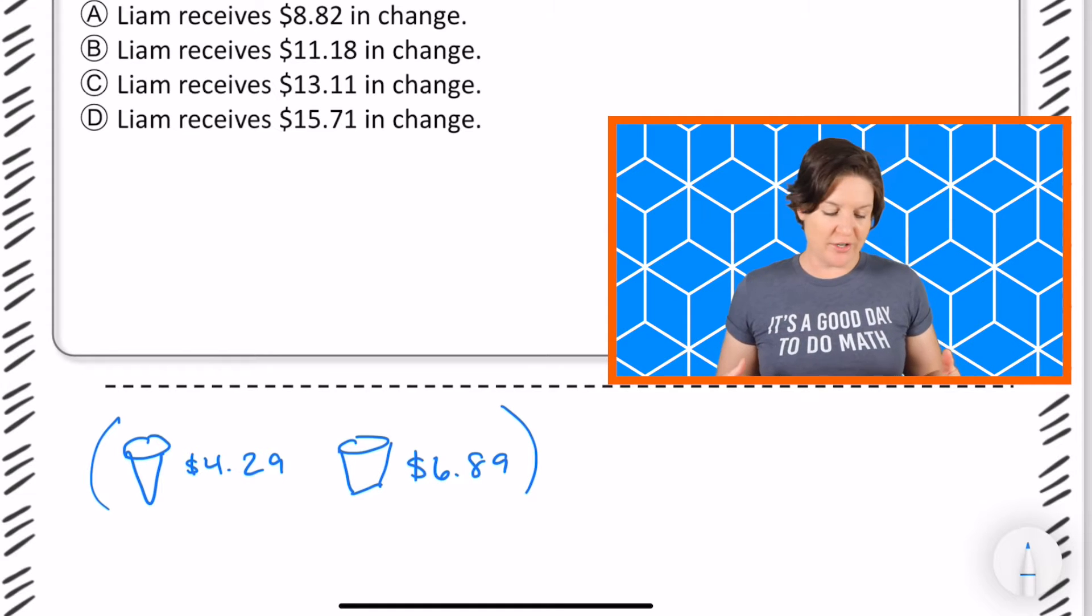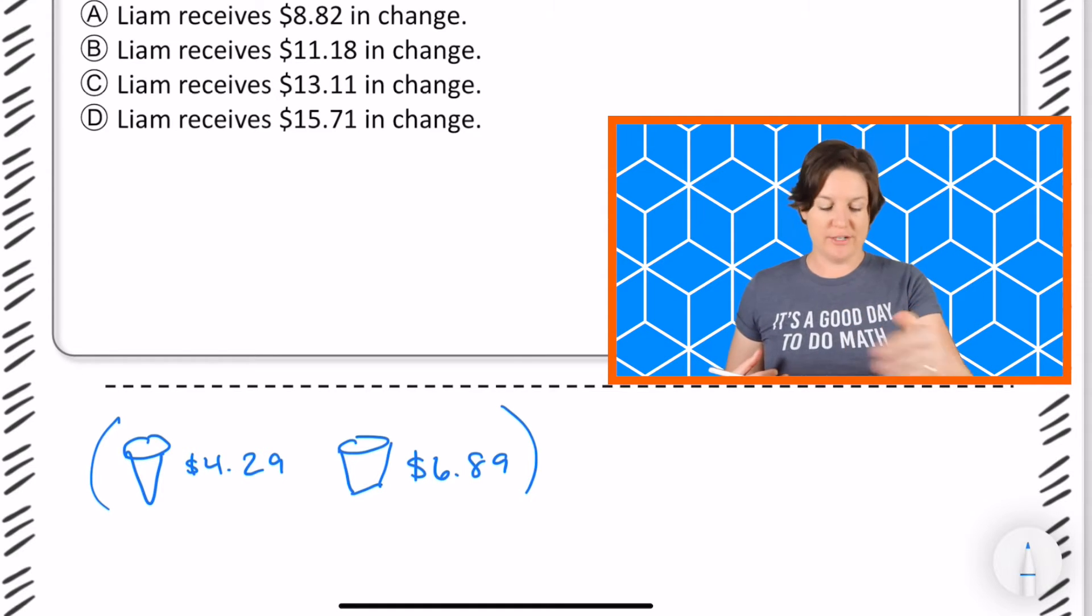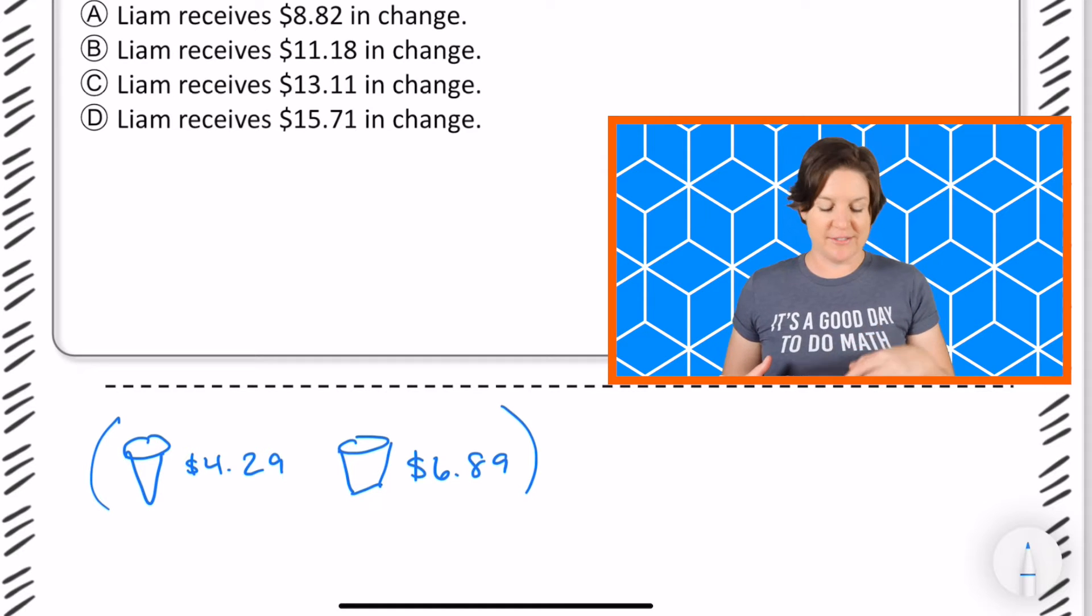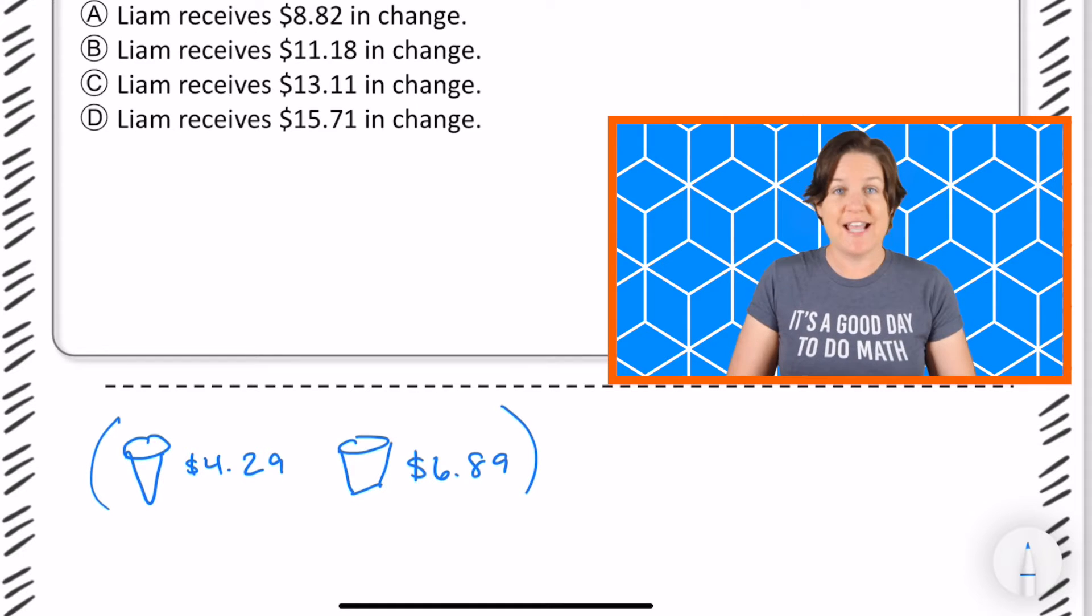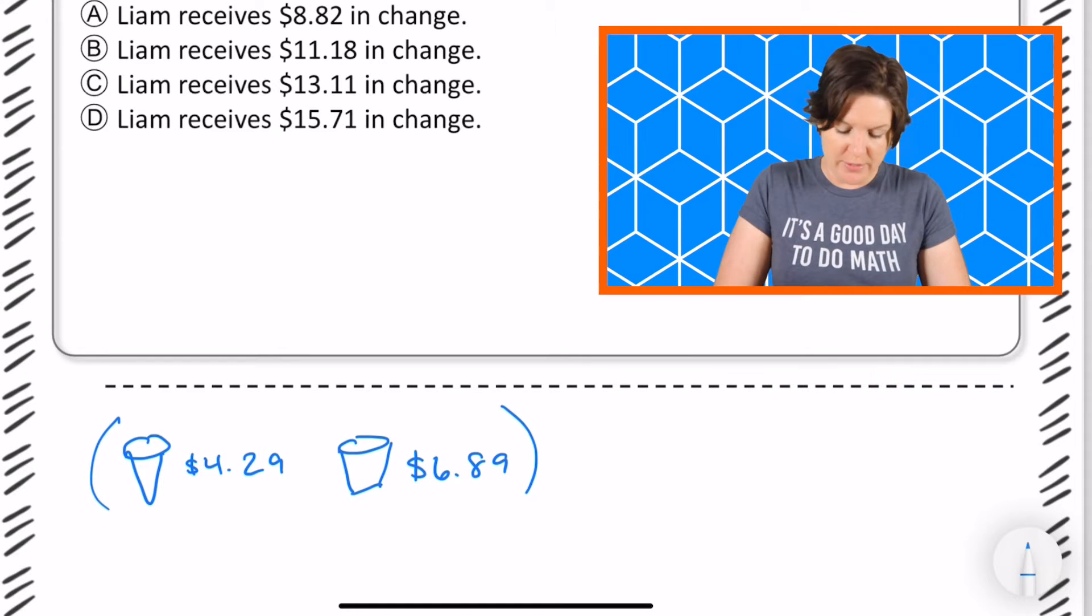You could also start with your $20 bill and subtract each item, so the $4.29 for the cone and the $6.89 for the milkshake, and then you could also get your total. But what I'm gonna do first is add these two amounts together.